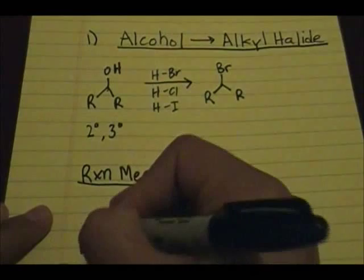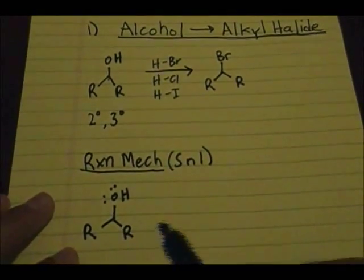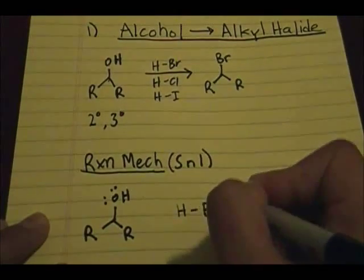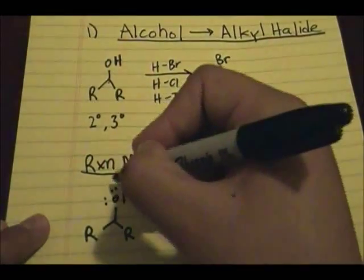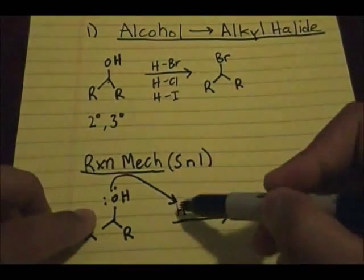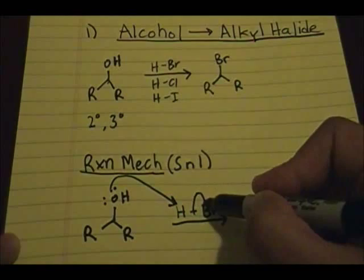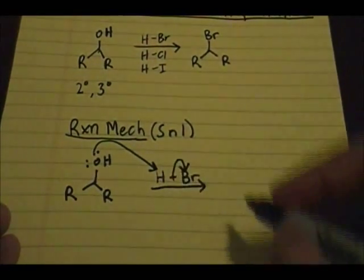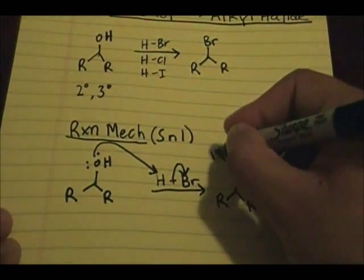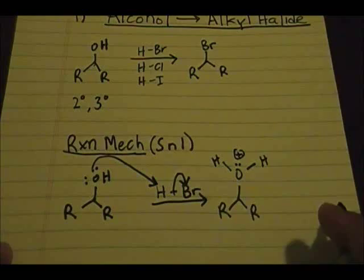So if this is your alcohol, it has those two pairs of electrons on it, and you're reacting with HBr. What happens first is that a pair of electrons from the oxygen attacks the hydrogen, forming a bond between this hydrogen and this oxygen. The pair of electrons between these two species goes on the bromine. The product of this step has oxygen with two H's and still has a lone pair, but it has a positive charge.